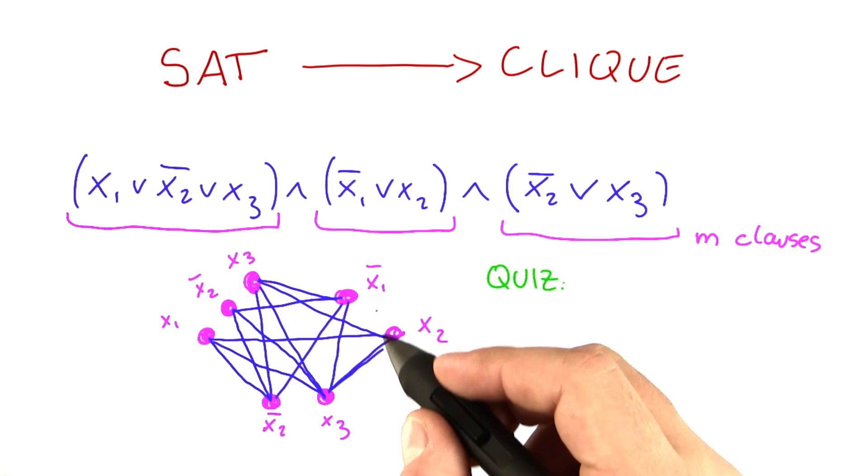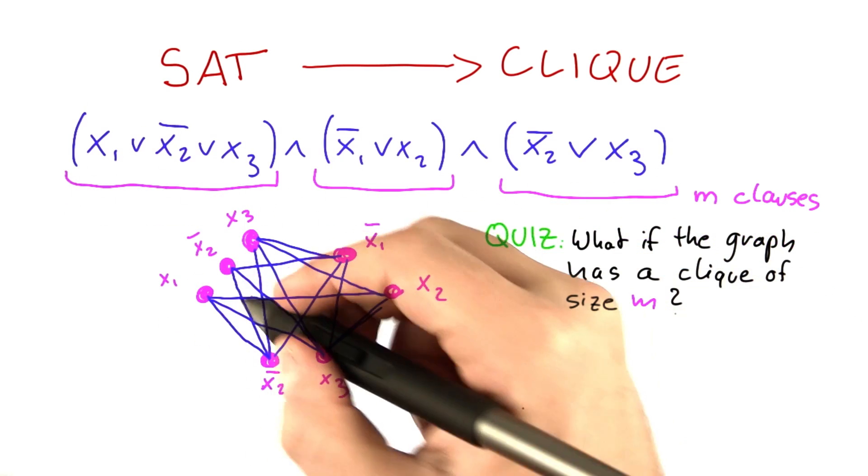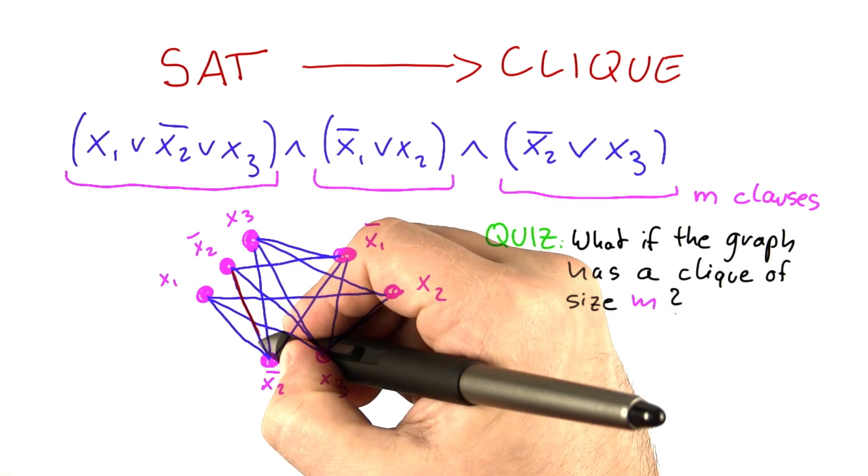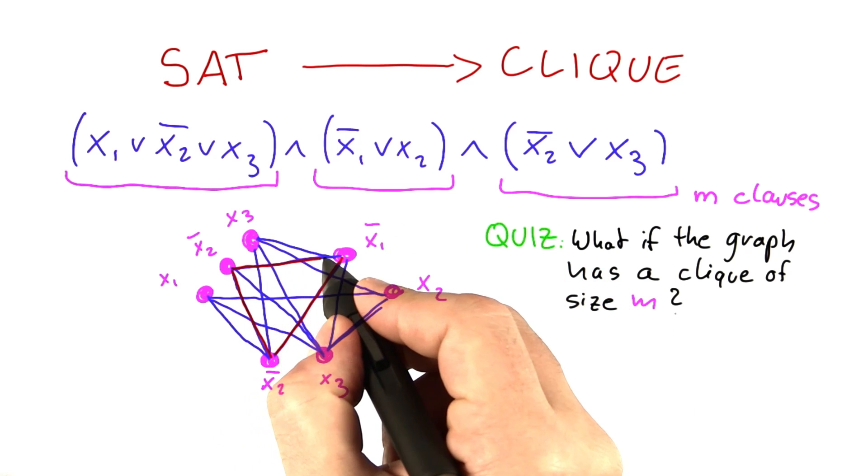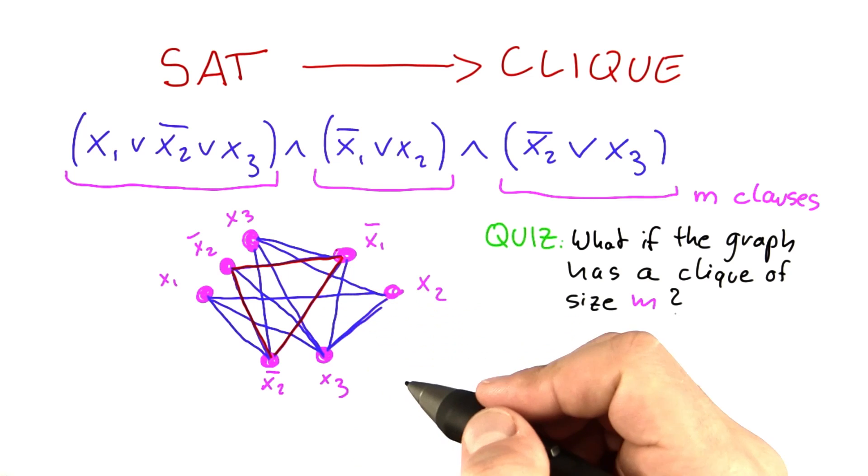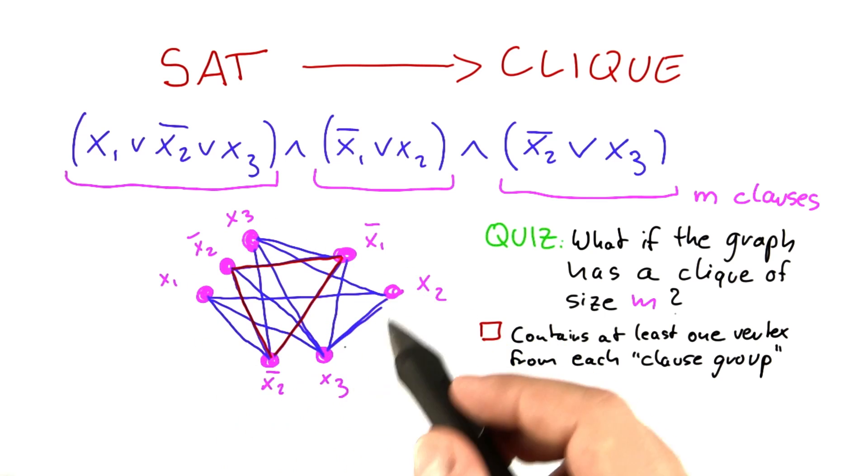And then let's say that the graph that we have constructed has a clique of size m. So one clique of size m, for example here, because m is 3, would be this here. All vertices are connected to each other. There's others that you can find, actually. So if you can find a clique of size m in a graph that was constructed this way,